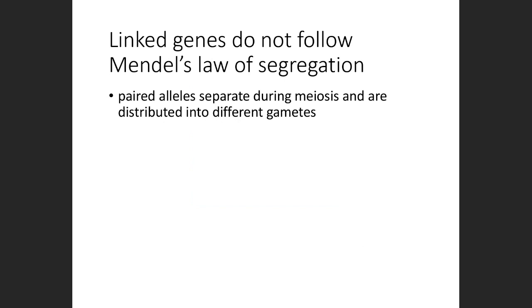This is why pea plants were a great choice for Mendel. He didn't know it at the time, but all the traits he was observing—seed shape, plant height, pod color—all of them were controlled by their own gene on their own chromosome. If any of these genes had been linked, Mendel would not have envisioned his law of segregation. Paired alleles appearing during meiosis and distributed into different gametes, that's his law of segregation.